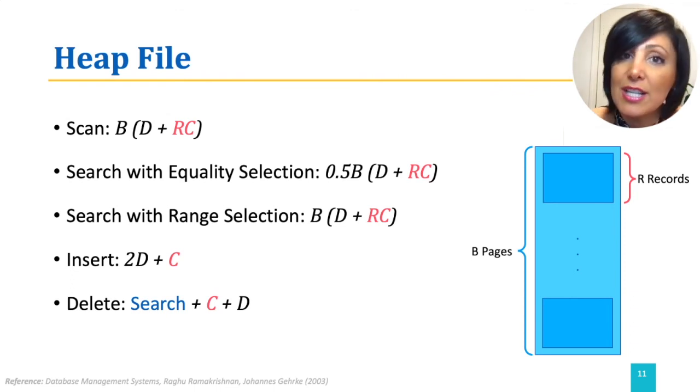For the search component, the time it takes for the search depends on how we define the record to delete. If it is indicated by record ID, it would only be D to get the page that contains the record. Otherwise, for example, if it is specified using an equality search, the cost will change accordingly, both by cost of search and by the cost of number of matching records to delete.